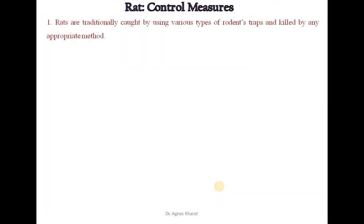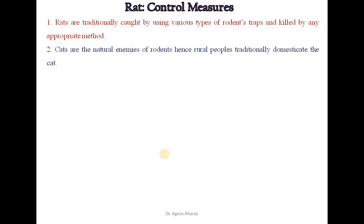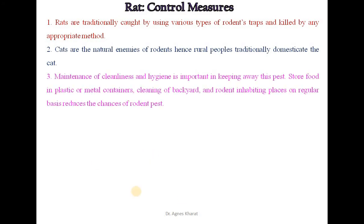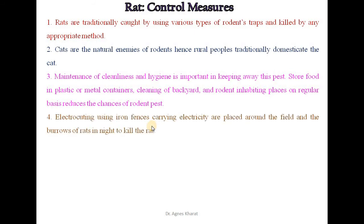What are the control measures of rats? Rats are traditionally caught using various types of rodent traps and killed by appropriate methods. Cats are the natural enemies of rodents; hence, rural people traditionally domesticate the cat. Maintenance of cleanliness and hygiene is important in keeping away this pest. Storing food in plastic or metal containers, and cleaning of backyard and rodent-inhabiting places on a regular basis, reduces the chances of rodent pests. Electrocuting using iron fences carrying electricity are placed around the field and burrows of rats at night to kill the rat.